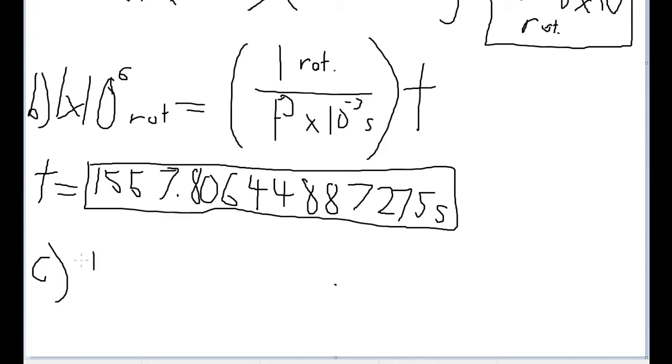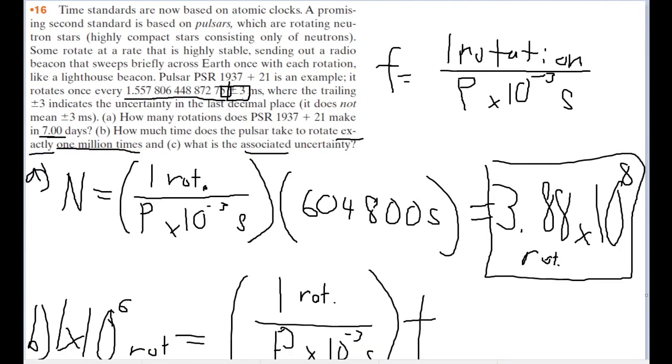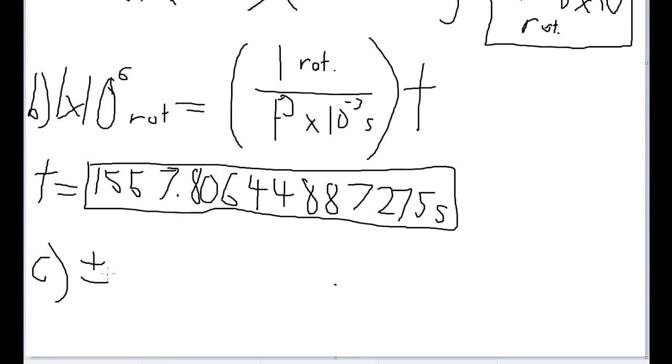Now, right now, the way the uncertainty is given with the way the problem says it is to this 5 here, which if you count, if you start from the decimal and count all the way back, that is 14 decimal places back. So that's plus or minus 3 times 10 to the negative 14 milliseconds.